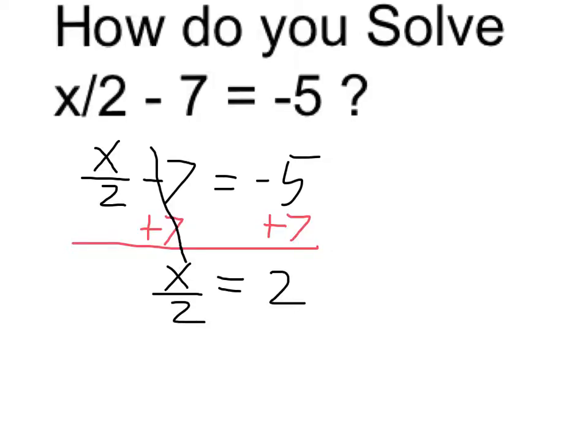Now to get rid of the division by 2, what I can do on both sides is just multiply by 2. So on this side I'm multiplying by 2, and on the left side, multiplying by 2 and dividing by 2 cancels.